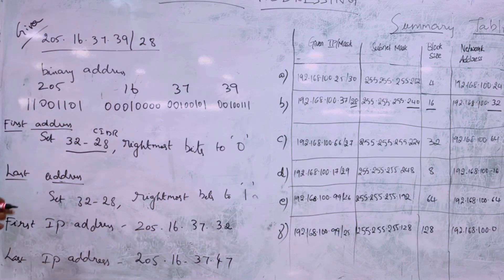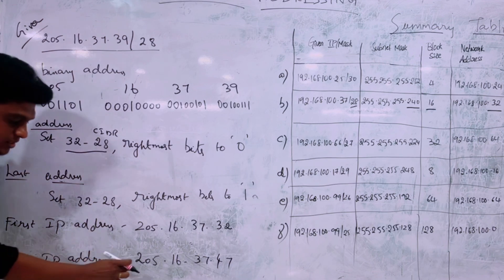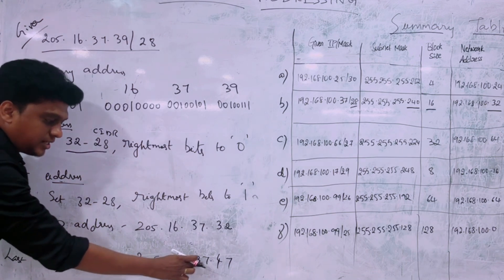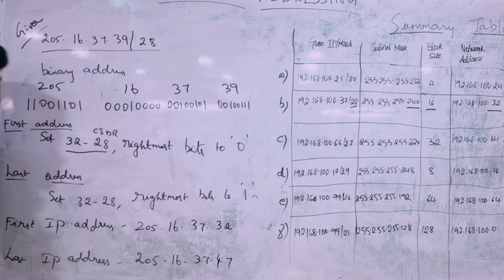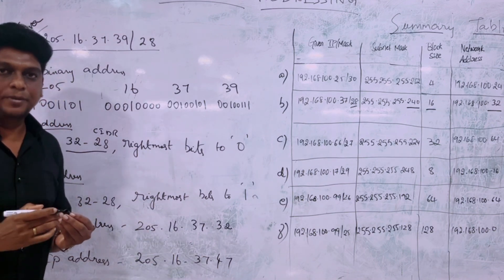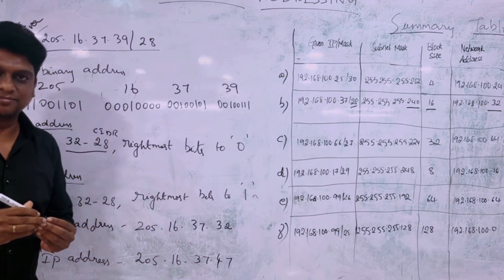After setting the last four bits to zero, the first IP address is 205.16.37.32. After setting the last four bits to one, the last IP address is 205.16.37.47. This is how the first and last IP addresses in a network are identified.